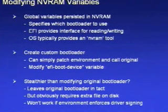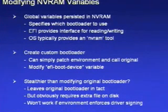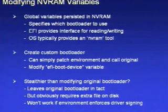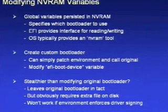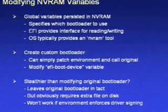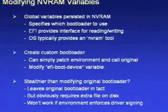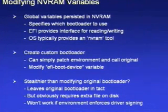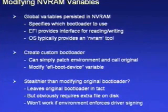Modifying NVRAM variables: we have the concept of global variables persisted in non-volatile RAM that specify which bootloader we should execute. EFI provides an interface for reading and writing variables, and the operating system also provides a tool for doing this. We can create our own bootloader and modify a variable in the NVRAM to say use our bootloader instead of boot.efi. Typically we'd either patch the environment somehow, insert a shim, and then call the original bootloader. The variable name we'd need is the EFI boot device variable. Is this stealthier than modifying the original bootloader? Probably not — it leaves the original bootloader intact, but we've modified the NVRAM, which is pretty obvious if you're carrying out forensics. Again, it won't work if the environment enforces driver signing.